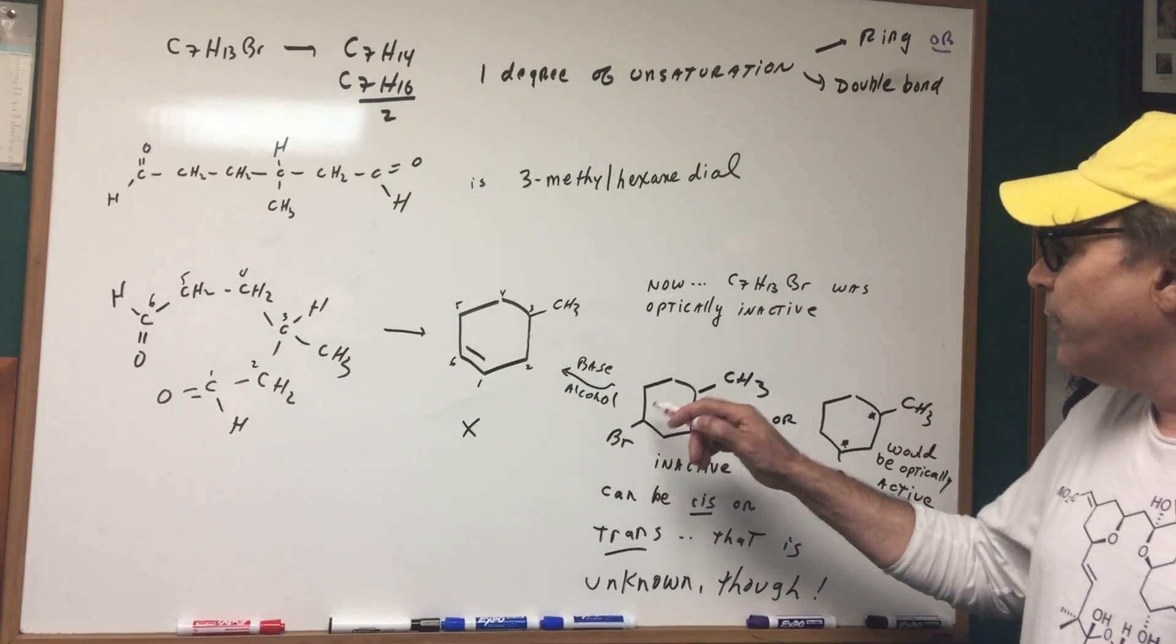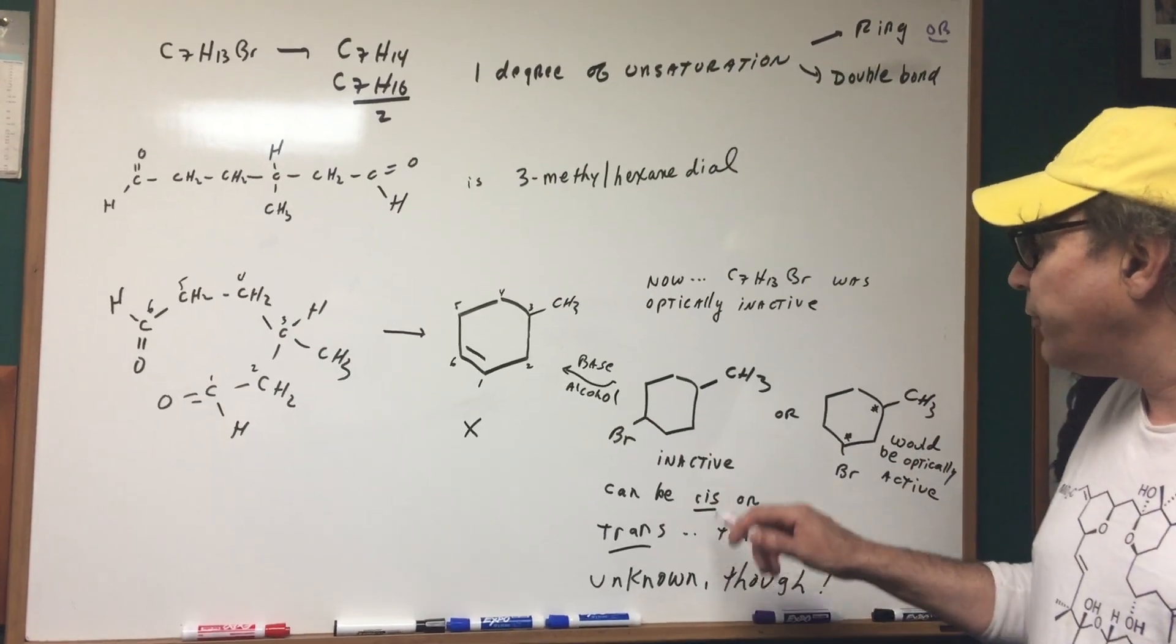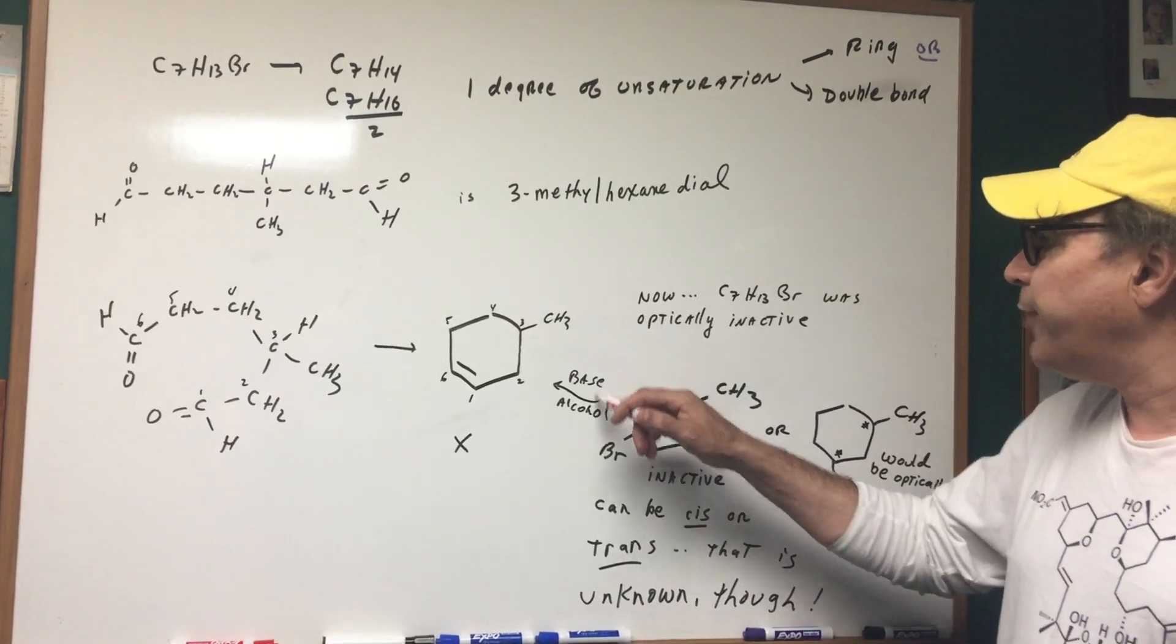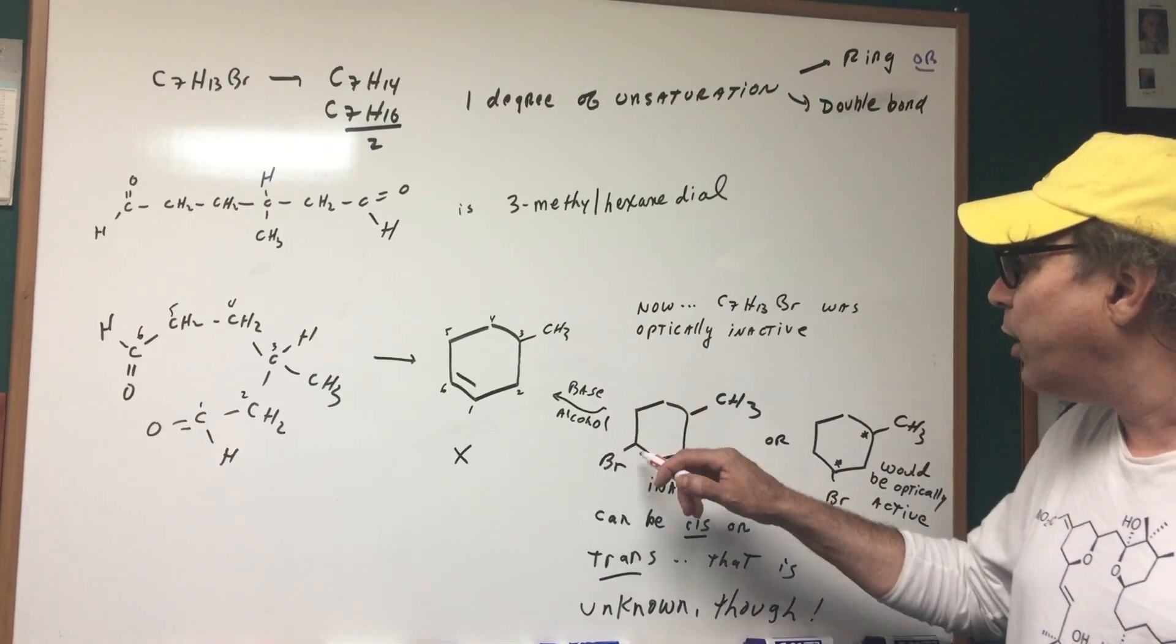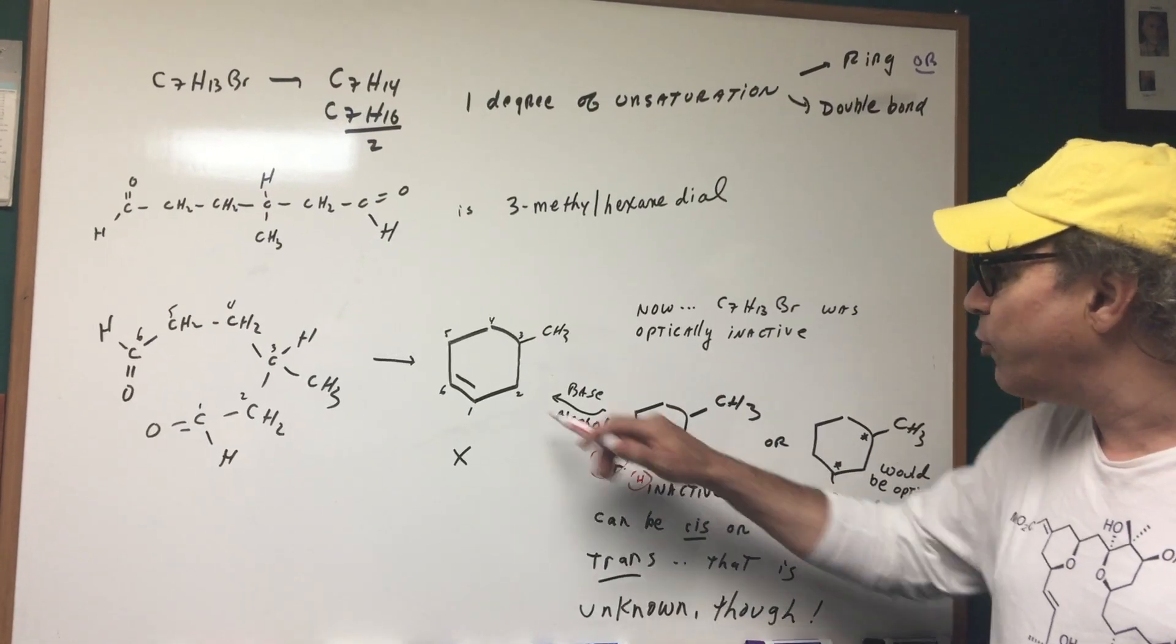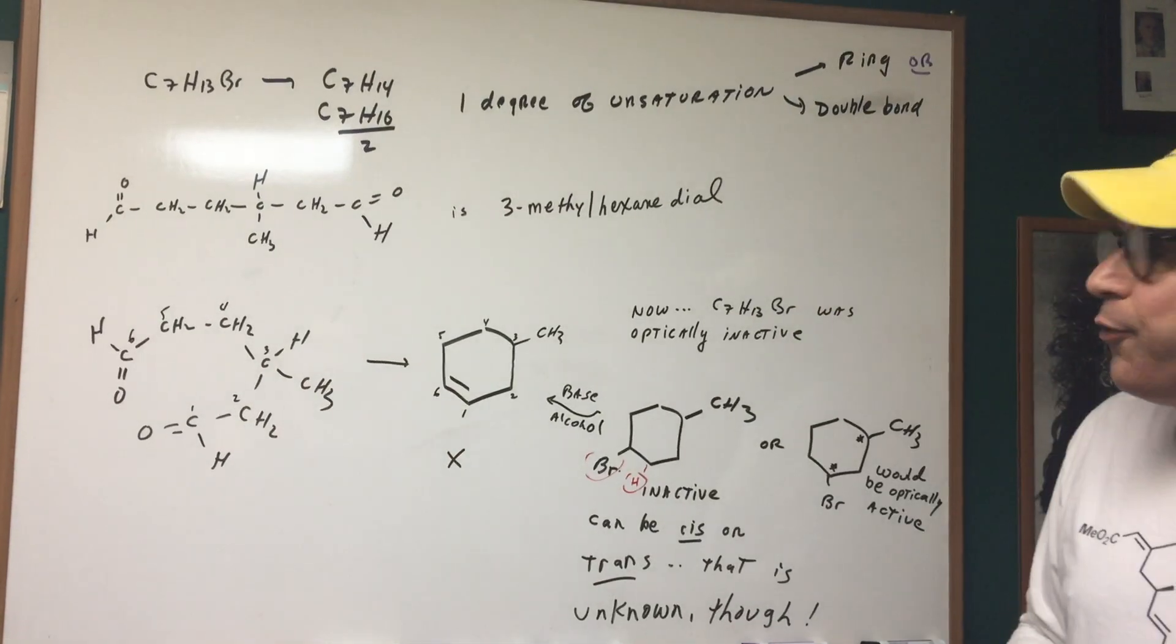So as a final check, this is my final answer. And cis or trans, that's unknown, but this would be the compound. This is the constitutional isomer. If you treated this with base in the alcohol, you would do the E2. You would take this and this off to give this. And then when you did ozonolysis, it would conform to this. I hope that gives you an idea of how we go about doing what's called a puzzle reaction.